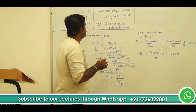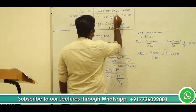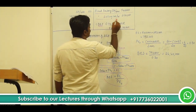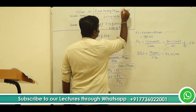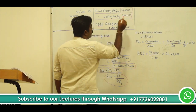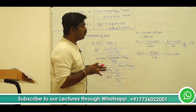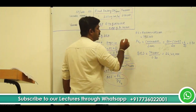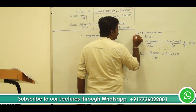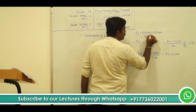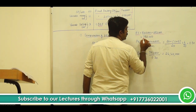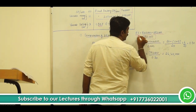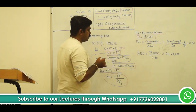In the question, you are given: fixed factory overhead per year is 5,40,000, and fixed selling cost per year is 2,52,000. If you add these two, you get total fixed cost. Fixed cost equals 5,40,000 plus 2,52,000, which gives fixed cost of Rs. 7,92,000. This is the numerator we need.